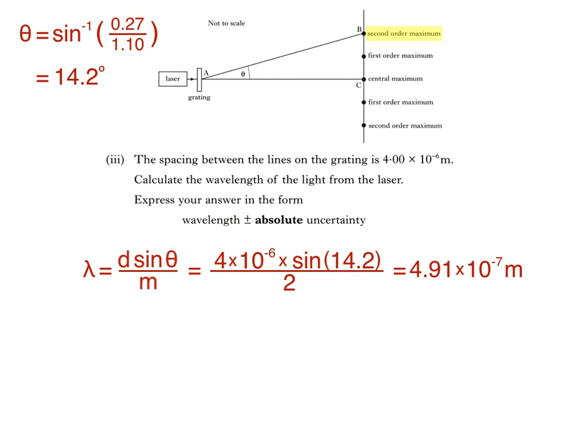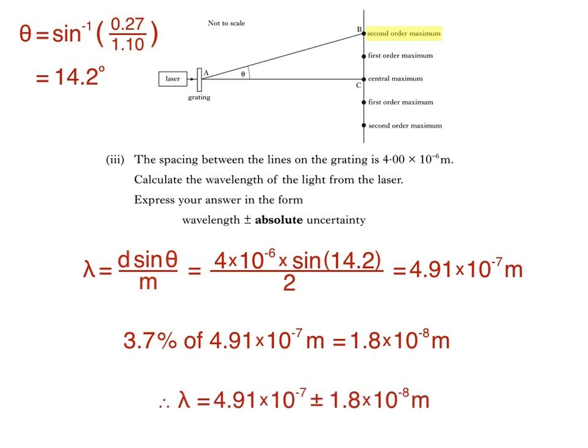Remember, we calculated the percentage uncertainty in AB as 0.9% and the percentage uncertainty in BC as 3.7%. We take the larger percentage uncertainty — 3.7% — as the percentage uncertainty in wavelength. Since we're asked to calculate the absolute uncertainty, we calculate 3.7% of our calculated wavelength value, which works out as 1.8 × 10⁻⁸ metres. Finally, combining these two values: the wavelength of the light from the laser is 4.91 × 10⁻⁷ ± 1.8 × 10⁻⁸ metres.